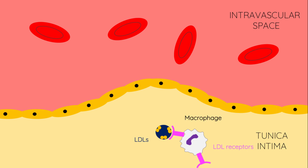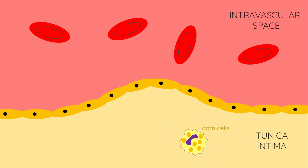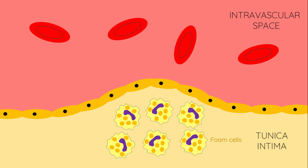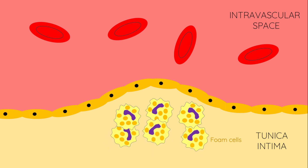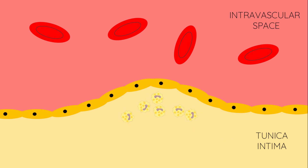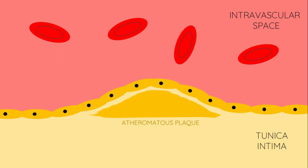These macrophages then become saturated with lipids and are known as foam cells. Eventually these foam cells break down and the resulting collection of lipids forms the beginnings of an atherosclerosis plaque. Proliferation of this plaque causes narrowing of the artery which can result in thrombosis and result in ischemia or infarction.